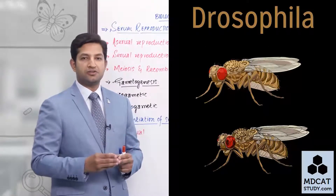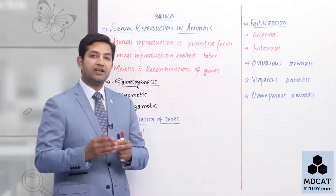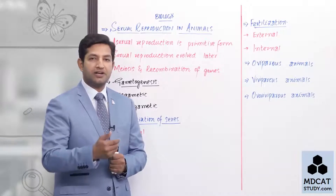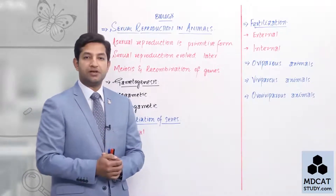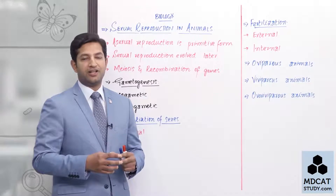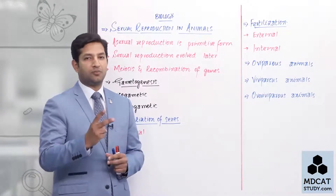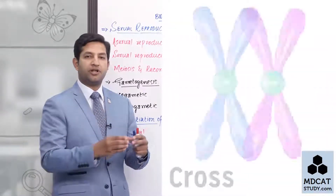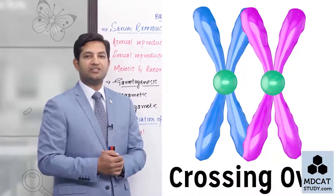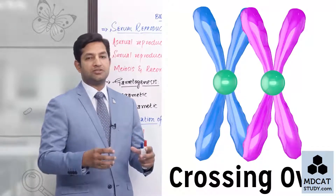The asexual type of reproduction was the primitive mode of reproduction. But with the arrival of sexual reproduction, much more diversity and variety has been observed. Behind this diversity, there are fundamentally two factors. One is crossing over that happens during sexual reproduction, and the other thing is genetic recombination.